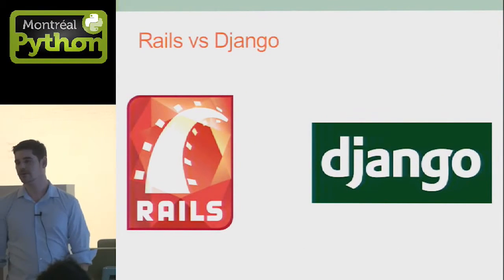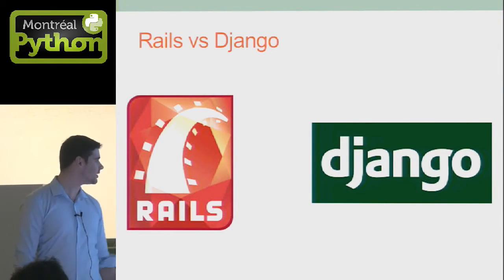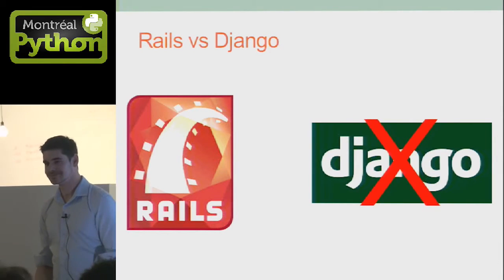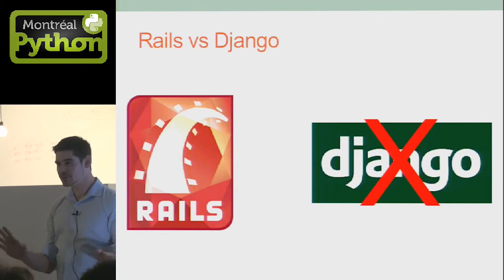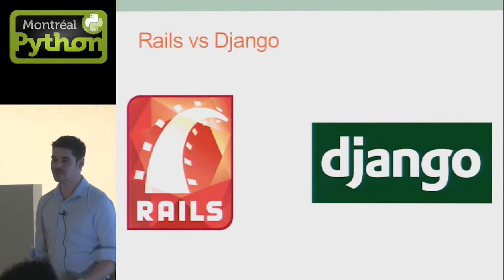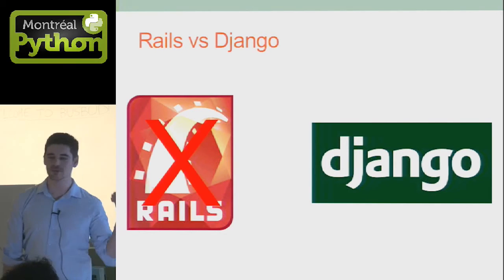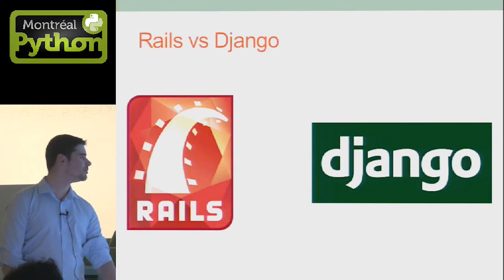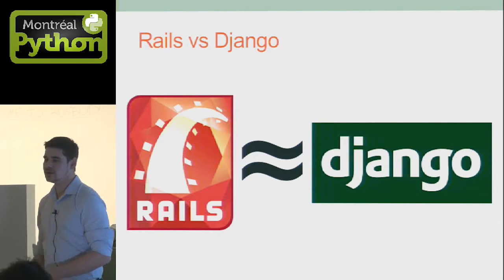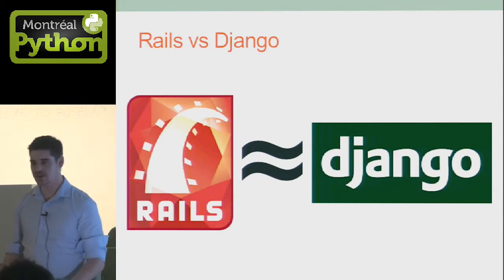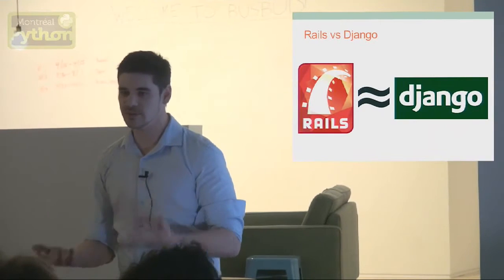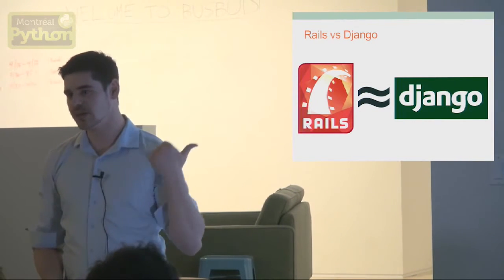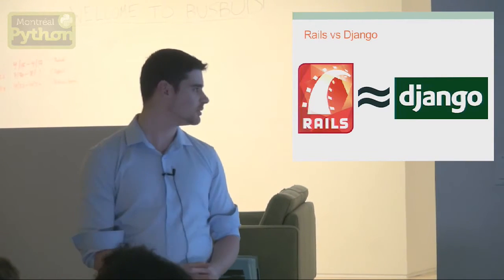So why are we here? Rails versus Django. First thing I want to say is that if you know Rails, you really don't need to know Django. And if you know Django, you don't need to know Rails either. It's pretty much equal. For me, both frameworks are equivalent. They do have their own opinions and do different things, but in the end they do the same job. If you prefer Python, use Django. If you prefer Ruby, use Rails. That's pretty much the trick.